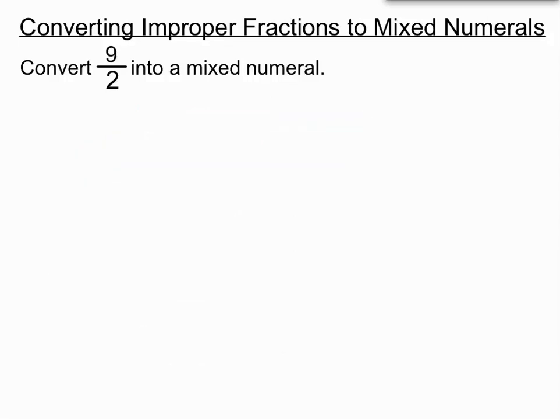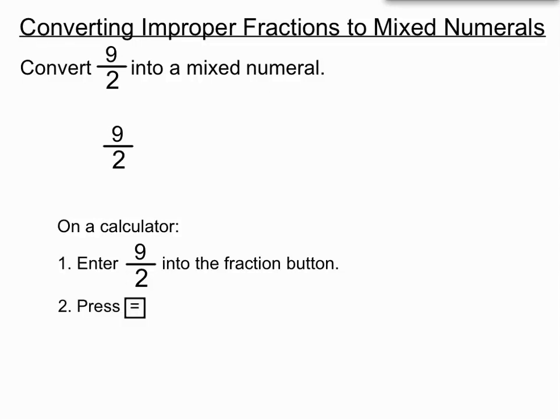Okay. Now, on our calculator, what we can do is the following. We can enter 9 over 2 into our fraction button. Then we can press equals. And then if we press shift and the S to D button, which is just over near your all clear signs, then that will give you an answer straight out of 4 and a half.